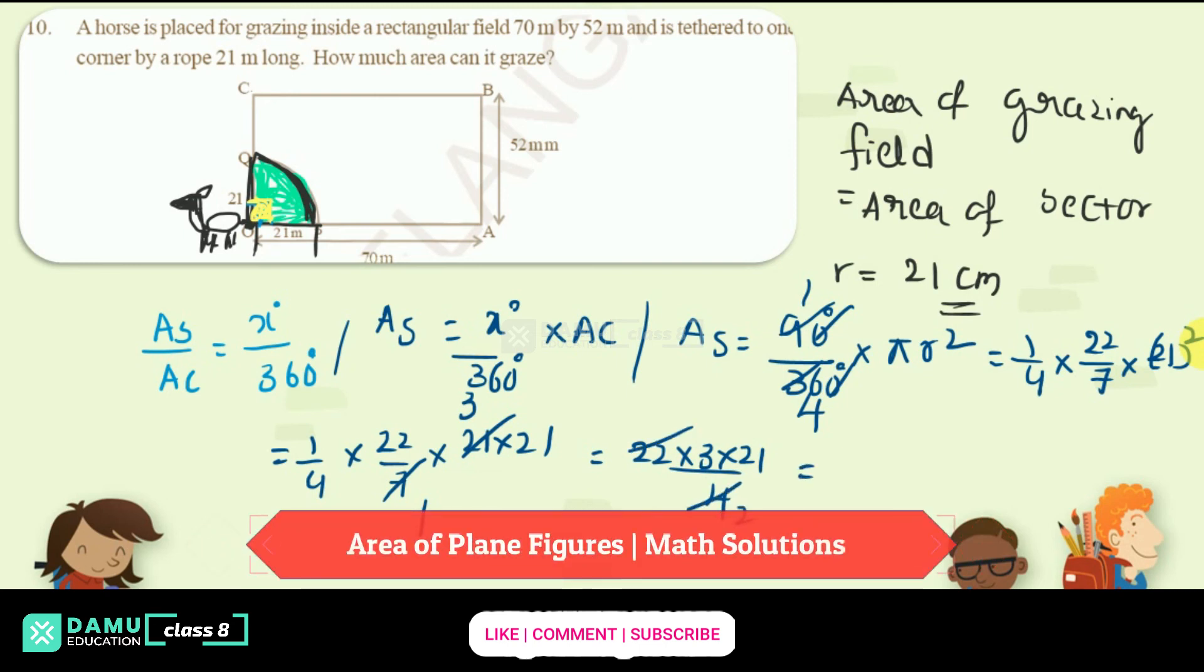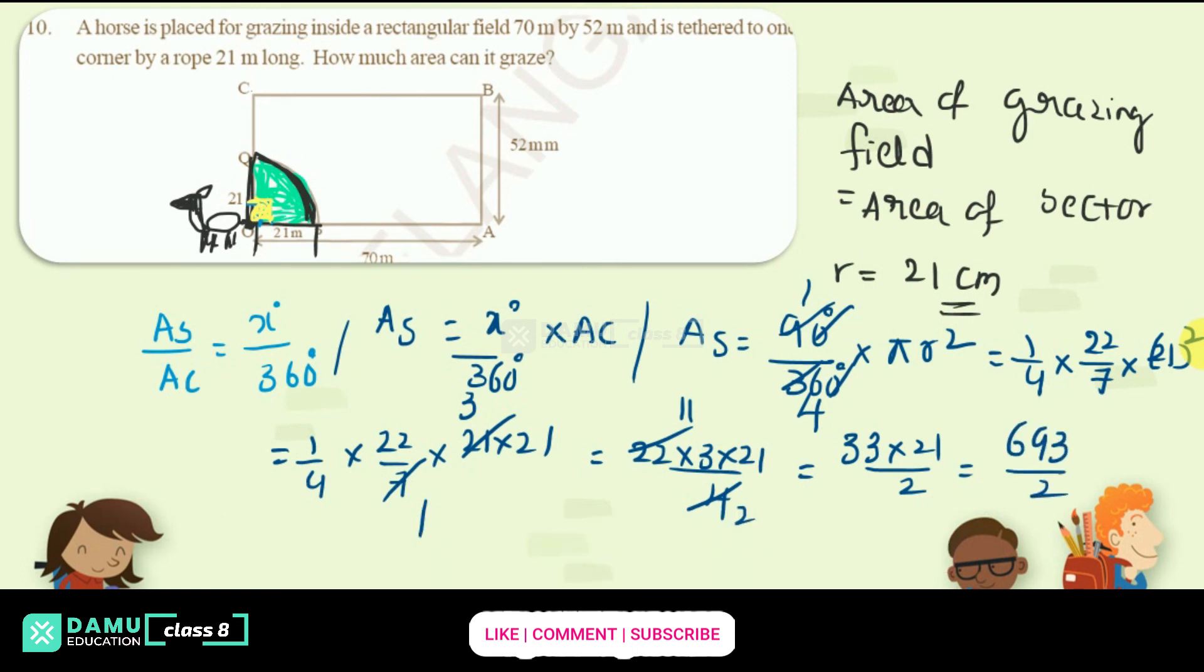So 7 cancels, giving 22 into 3 into 21 by 4. Then 2 cancels giving 11, so 11 into 3 is 33 into 21 by 2. So 33 into 21 is 693 by 2. Then what you are getting here is 693 by 2, which equals 346.5 meter square.